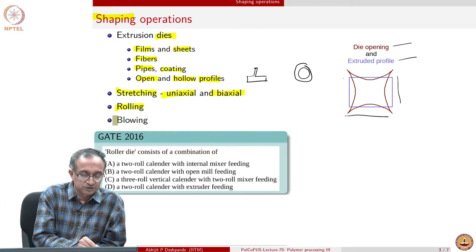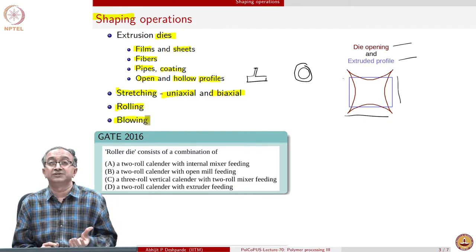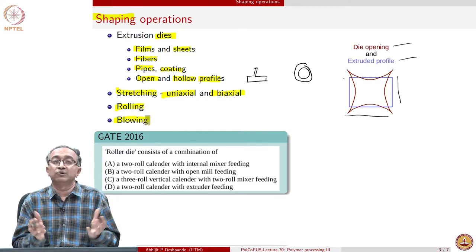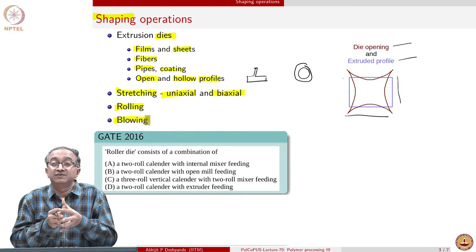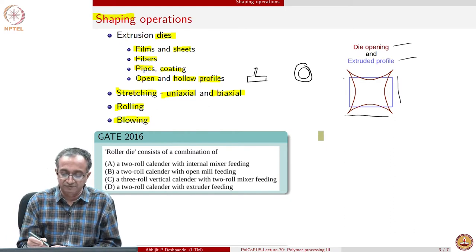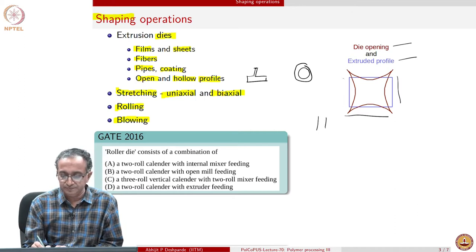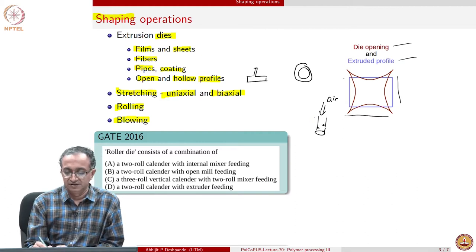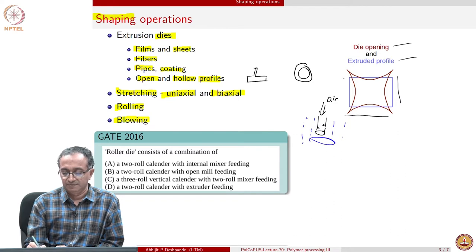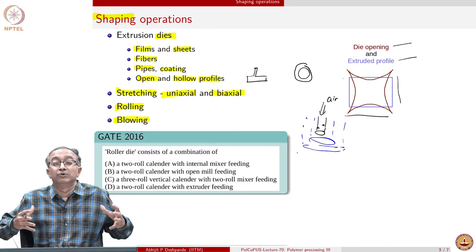We could also have blowing and in case of bottle making blowing is used, in case of film making blowing is used, where from inside we blow the material. If I extrude a pipe, I will get a pipe being extruded and in this if I blow air, what happens is this air will try to push and in effect this film will start blowing. That is the process of blowing.